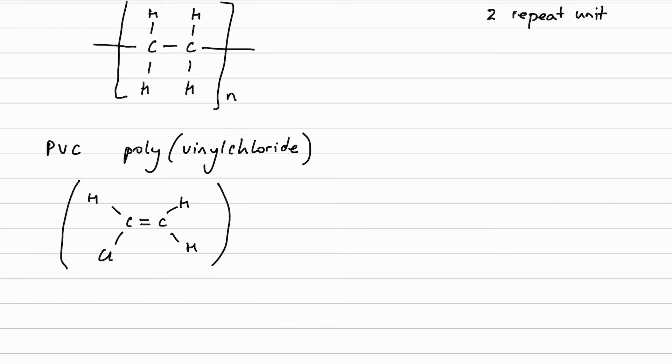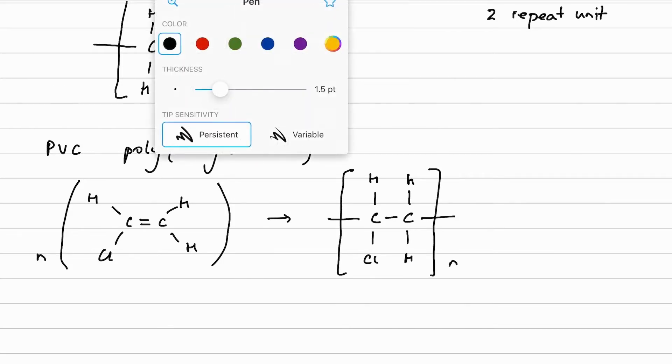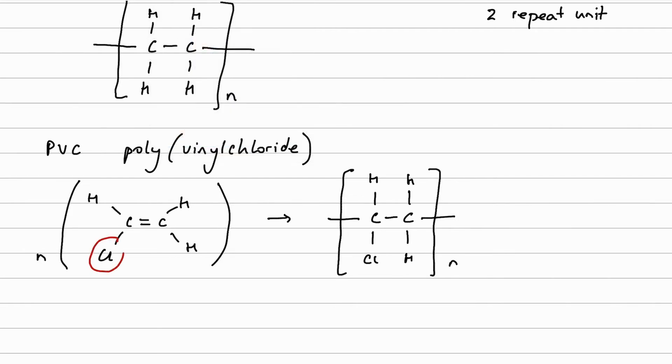And if I have lots of those, I can make or draw out a section of my polymer, PVC. So again, hanging bonds, square brackets, and the N. Note that the chlorine was on the first carbon below and that is where I have placed it within my repeat unit.